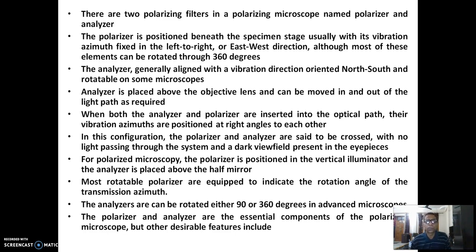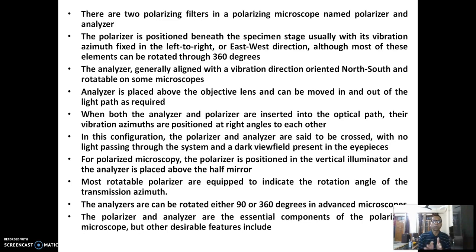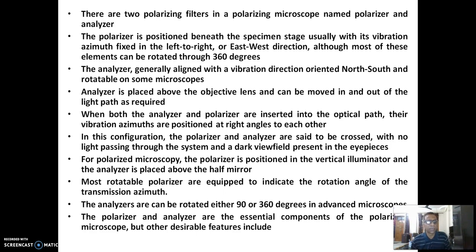The analyzer is placed above the objective lens and can be moved in and out of the light path as required. When both the analyzer and polarizer are inserted into the optical path, their vibration azimuths are positioned at right angles to each other, and when the sample is properly focused we get a bright field. In this configuration the polarizer and analyzer are said to be crossed, with no light passing through and a dark view field present in the eyepiece.